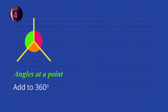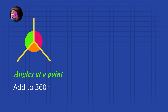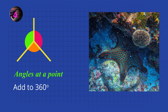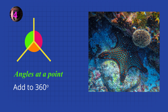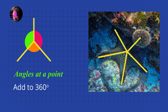In this shape, can you see that all the angles add up to 360 degrees? These are called angles at a point. In the starfish example, all five angles equal 360 degrees, so each angle must be 72 degrees.